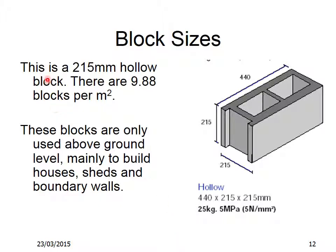This is a 215mm hollow block. There are 9.88 blocks per square metre — again, you would round this off to 10 for calculation purposes. These blocks are only used above ground level, mainly to build houses, sheds and boundary walls. The dimensions are 440mm long, 215mm high and 215mm wide.